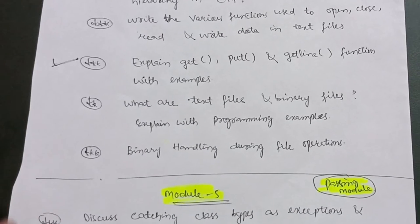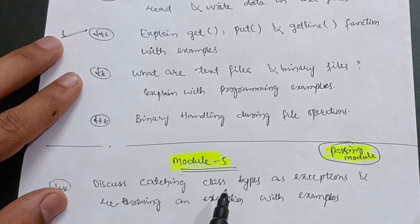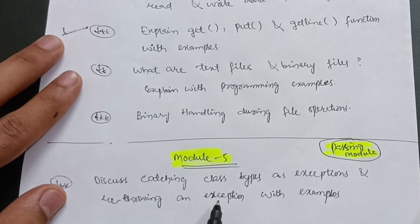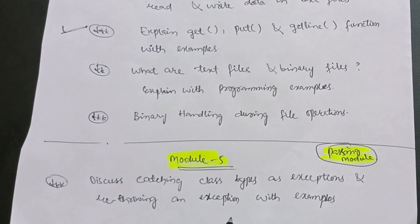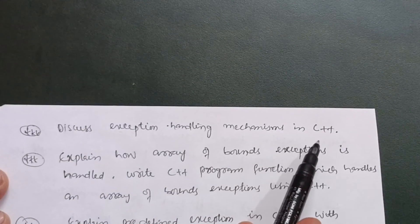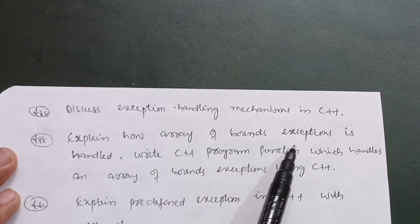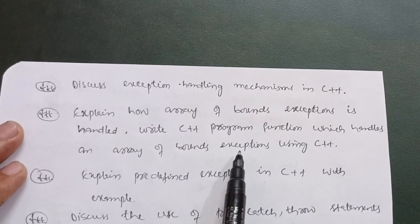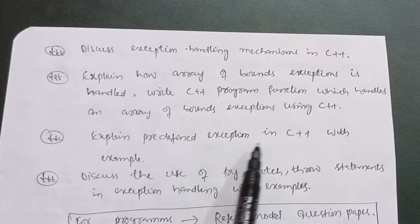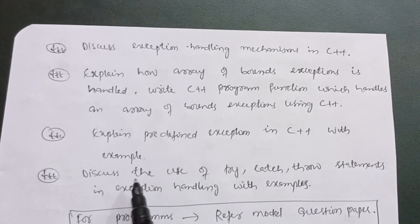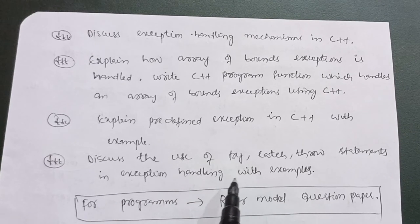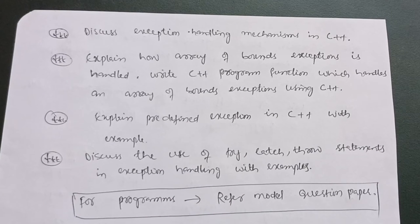The third passing module is Module 5. Cover: discuss catching class types as exceptions and rethrowing an exception with examples; discuss exception handling mechanisms in C++ and explain how array out-of-bounds exceptions are handled, with a C++ program that handles array out-of-bounds exceptions; explain predefined exceptions in C++ with examples; and discuss the use of try, catch, and throw statements in exception handling with examples.